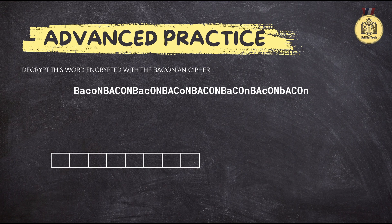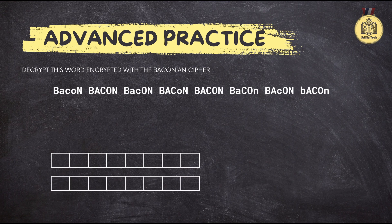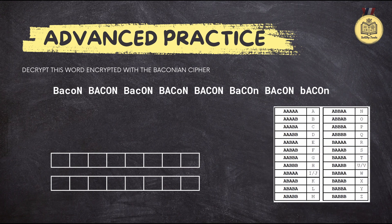This time, the secret message looks like this. It's a bit more complex than our breakfast code, but we'll crack it together step by step. The message is already divided into neat groups of five. What do you notice about it? We've got the whole word 'bacon' repeated over and over, but the capitalization is all over the place. Could that be our clue? The capitalization is most likely how the A's and B's are being disguised. We'll test each option on the first group of letters, 'bacon,' and see what we get.